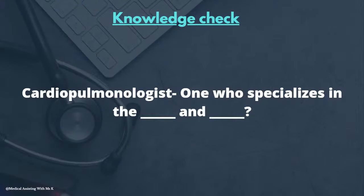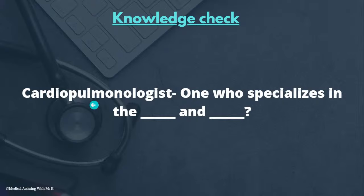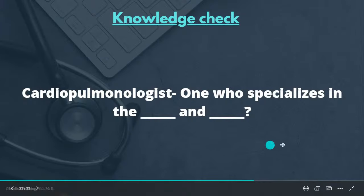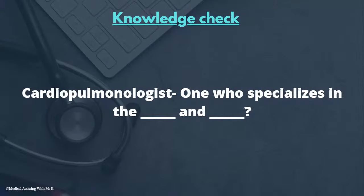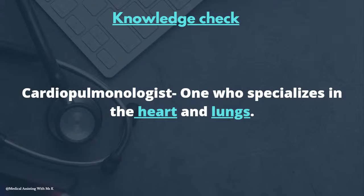Knowledge check: a cardiopulmonologist is one who specializes in what and what? We have two root words — cardio and pulmono. Cardio refers to heart, and pulmono means lung. So a cardiopulmonologist is one who specializes in the heart and lungs.